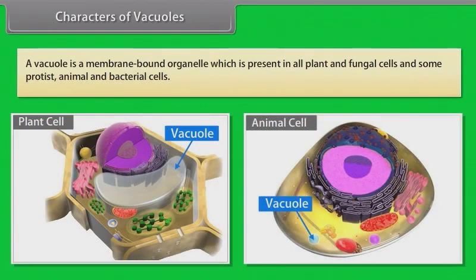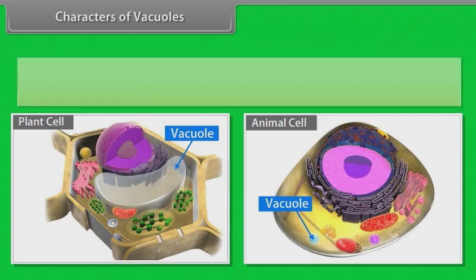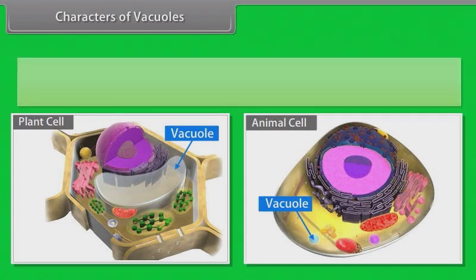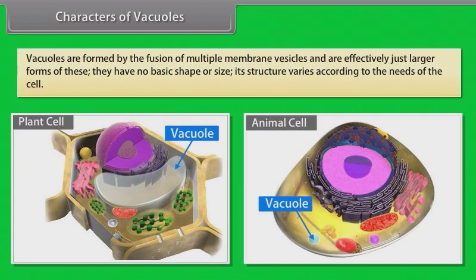A vacuole is a membrane-bound organelle which is present in all plant and fungal cells and some protist, animal and bacterial cells. Vacuoles are essentially enclosed compartments which are filled with water containing inorganic and organic molecules including enzymes in solution, though in certain cases they may contain solids which have been engulfed. Vacuoles are formed by the fusion of multiple membrane vesicles and have no basic shape or size.